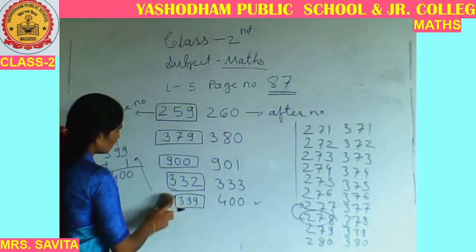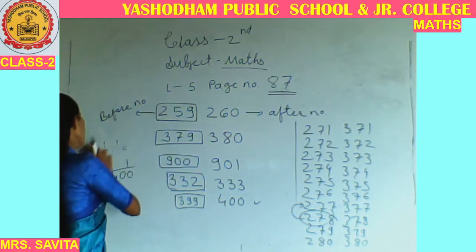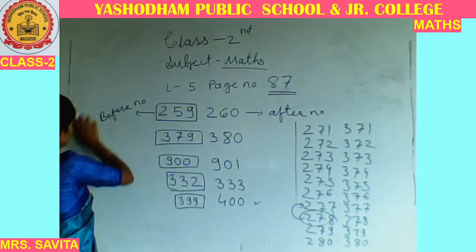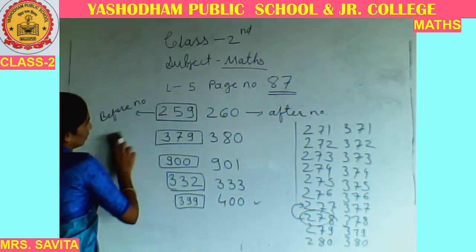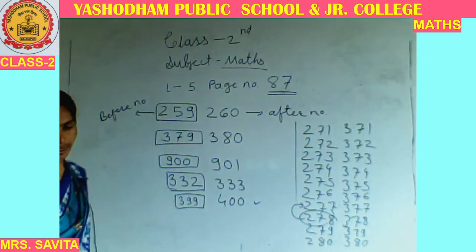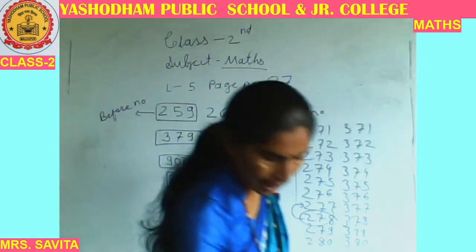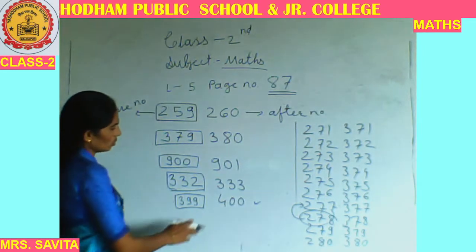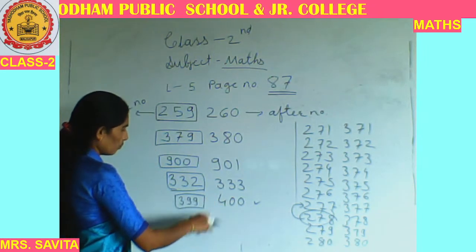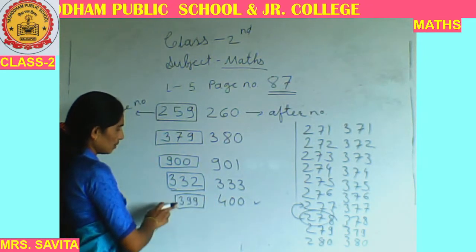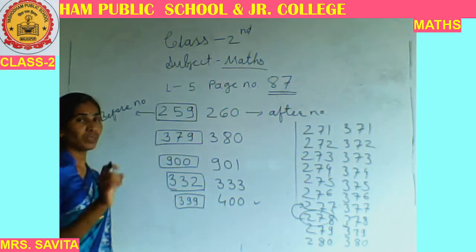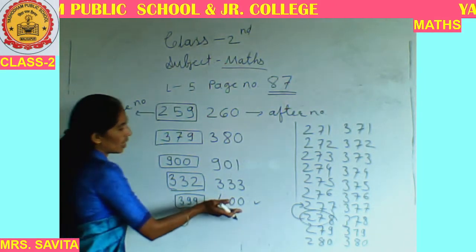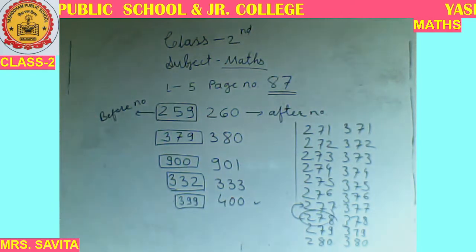I am explaining in detail so that you can check whether your answers are correct or wrong — you have to learn to tally your answers. After writing the answer, you have to find out how that answer came. So 400's before number is 399 — meaning 399, then after comes 400.